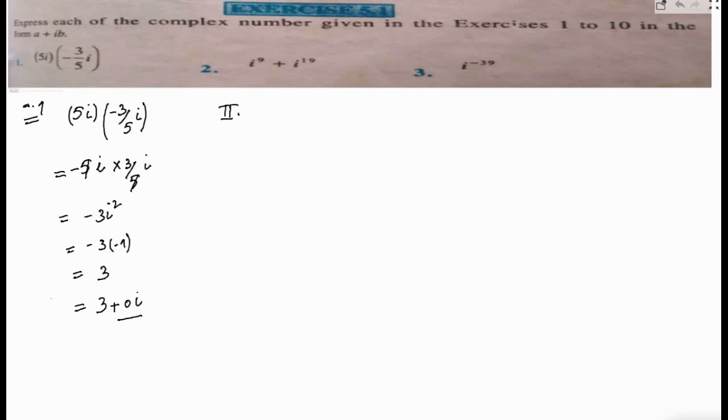Now let's take part number two. It's iota to the power 9 plus iota to the power 19. We can write this as iota to the power (4 times 2 plus 1) plus iota to the power (4 times 4 plus 3).